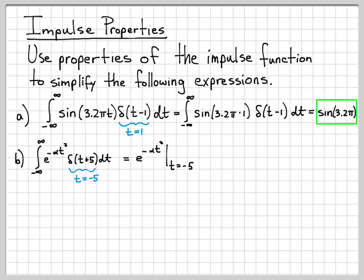So we know the result of this is going to be my underlying signal evaluated at the time where the impulse is located. So one way to write that mathematically is with this vertical bar, which says evaluate this quantity at this point. So I need to evaluate the signal e to the minus αt² at the point t equals negative 5,